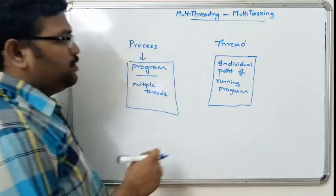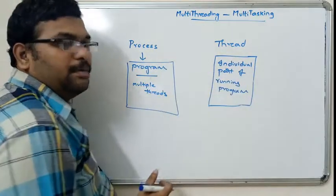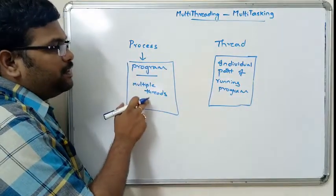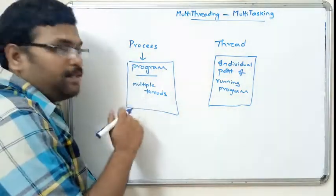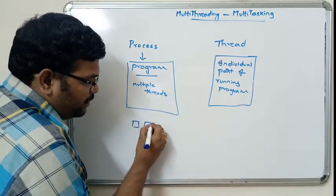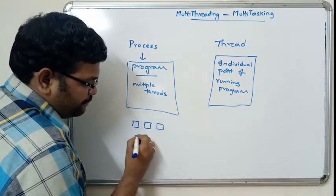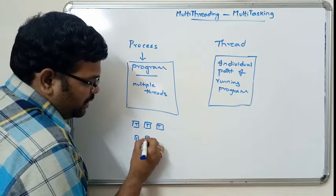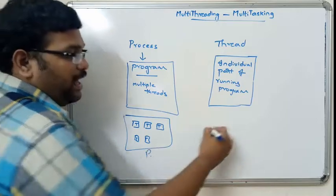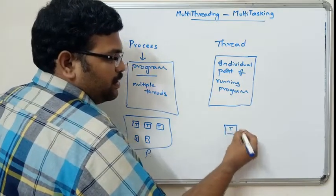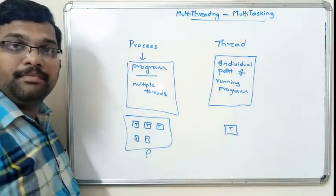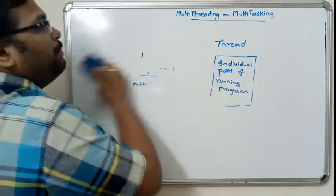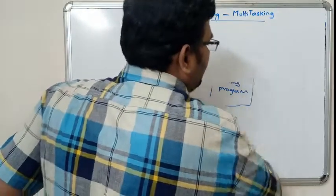A thread is an individual part of a running program, whereas the process consists of multiple threads. For example, thread 1, thread 2, thread 3, thread 4 — this complete set we call a program, and each individual part is called a thread. Now let us see the difference between multithreading and multitasking.